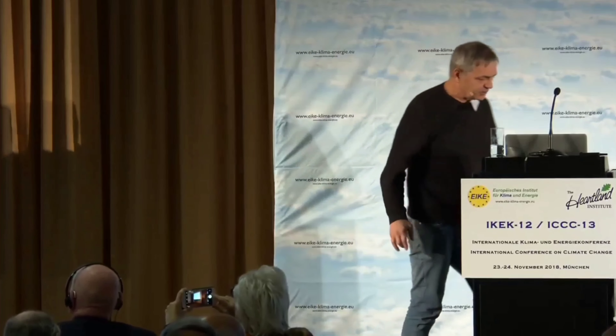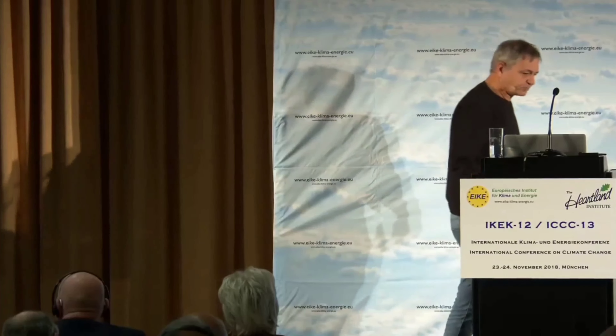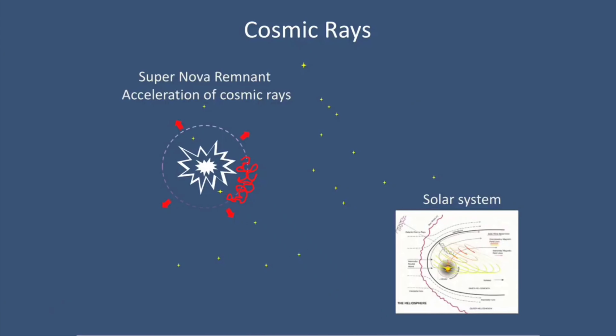Let's start with the idea that you have a supernova that goes off. One of the main characters in what I'm going to talk about is cosmic rays. Cosmic rays are mainly produced when you have supernovae — these big exploding stars. They produce a shock front that accelerates particles to extremely high energy, so the interstellar space is actually radioactive. Some of these particles enter our solar system, and solar activity can modulate how many cosmic rays enter into the inner part of the solar system.